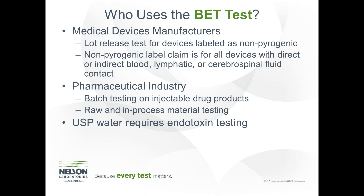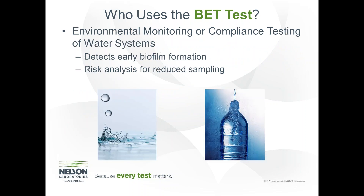BET testing is used for medical device manufacturers. It is typically done as a lot release test for any device that is in contact with the circulatory system, the lymphatic system, or cerebral spinal fluid. This test can be used to support a non-pyrogenic label claim. The pharmaceutical industry also uses endotoxin testing for injectable drug products and raw materials. We can also use the BET test as an environmental monitor for water systems, as the BET assay is one of the most sensitive tests in the world and can detect the early formation of biofilms that could contaminate a water system.